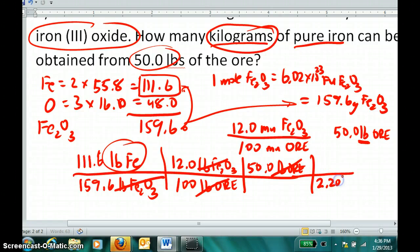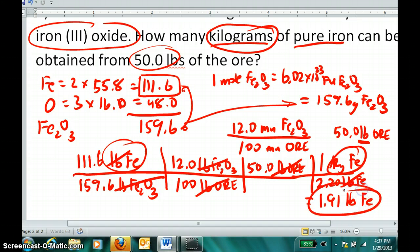And I am left with a mass of iron in the units that I want. And it's all equal to 1.91 pounds of pure iron. So we only get about 2 pounds of iron from this 50 pounds of ore, 48 pounds of waste, stuff that isn't iron.